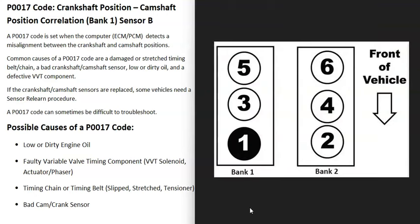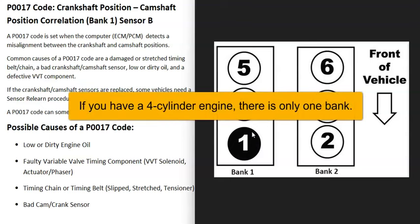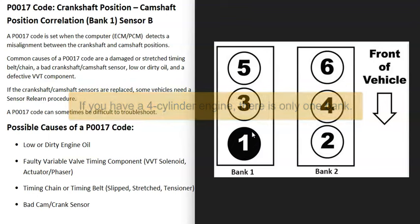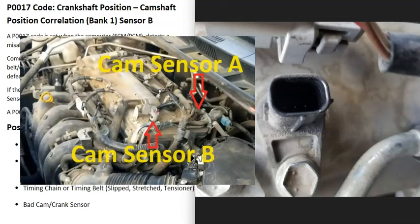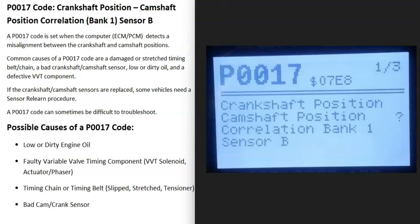If you have a V6 or V8 engine, it will have two banks. Bank one is always the side of the engine with the number one cylinder — google your specific engine to find which side that is. Bank one is where the computer is seeing the problem. Each bank can have one or two camshaft position sensors. Sensor A is usually on the intake and sensor B is usually on the exhaust.